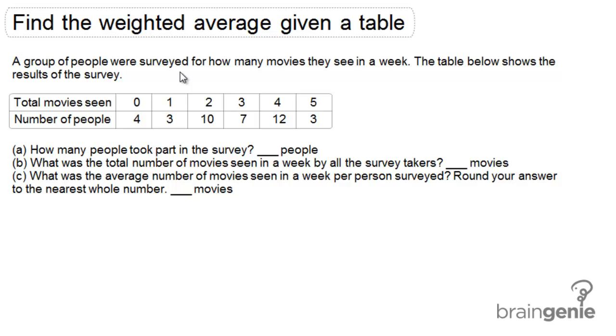So for example, in that first column, four people see no movies a week. In the next column, three people see one movie a week.